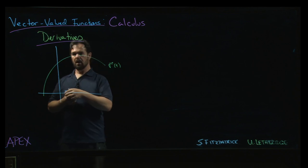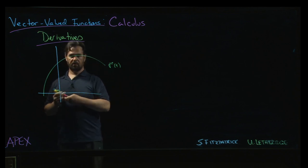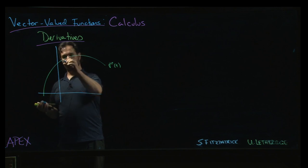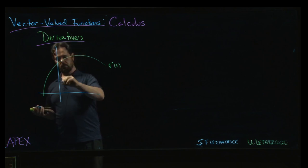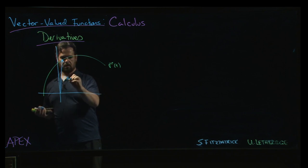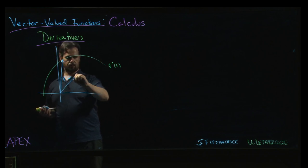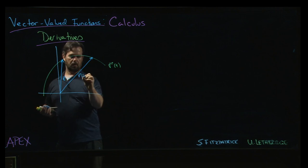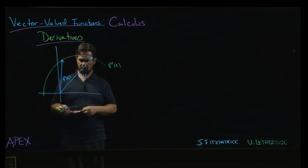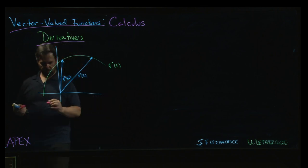And I've got a couple of points on that curve. So let's say I've got this point here—let's call that r at t0—and some other point on the curve. Let me draw the vector for it, right, r at t1.